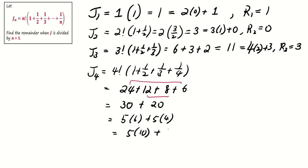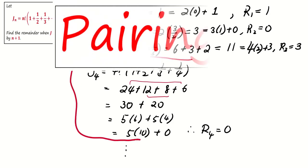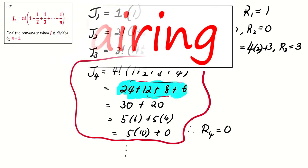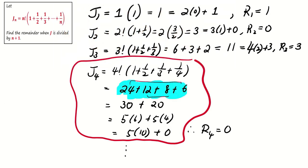Thus, we conclude that J4 gives a remainder of 0 when divided by 5. The key technique here is pairing, and it simplifies our calculation significantly. Let's keep this technique in mind as we proceed.